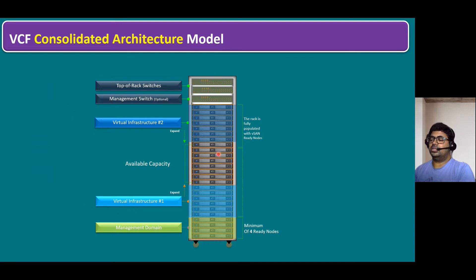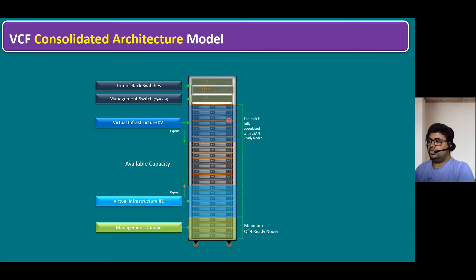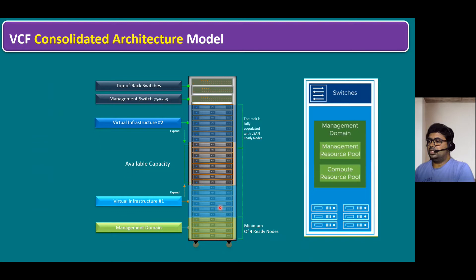HPE GreenLake uses a subscription-based, pay-as-you-go model and keeps one or two nodes on-premises so capacity can be added whenever necessary. In the same way, some buffer nodes are recommended to keep in the customer's data center. The entire consolidated architecture can be viewed as a physical rack or logically: physical ESXi servers with a management domain on top, two resource pools — one for management VMs and one for workload VMs — connected through top-of-rack switches.